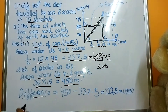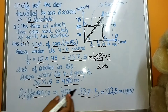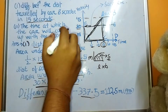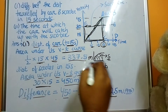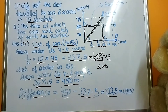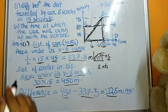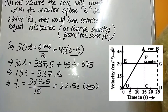Now we take their difference as demanded by the first bit of the question. The difference is 450 − 337.5 = 112.5 meters, which is the final answer to this part. Now let's move on to bit number 2.